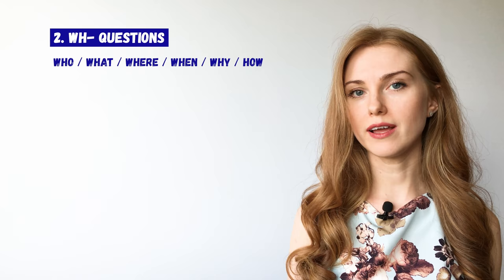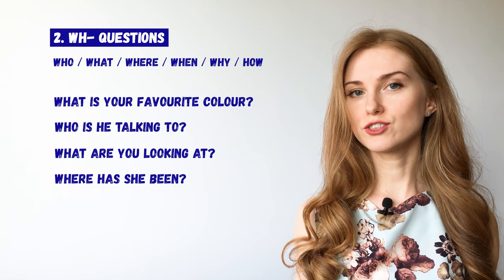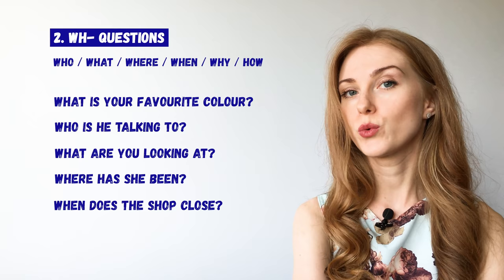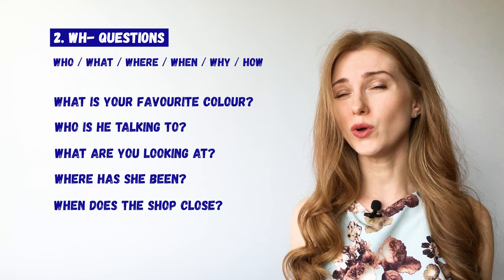What is your favourite colour? Who is he talking to? What are you looking at? Where has she been? When does the shop close? All these questions have a question word at the beginning. The word order is the same as in yes-no questions, so you have an auxiliary verb before your subject. But you can't answer yes or no — you have to give a full answer.